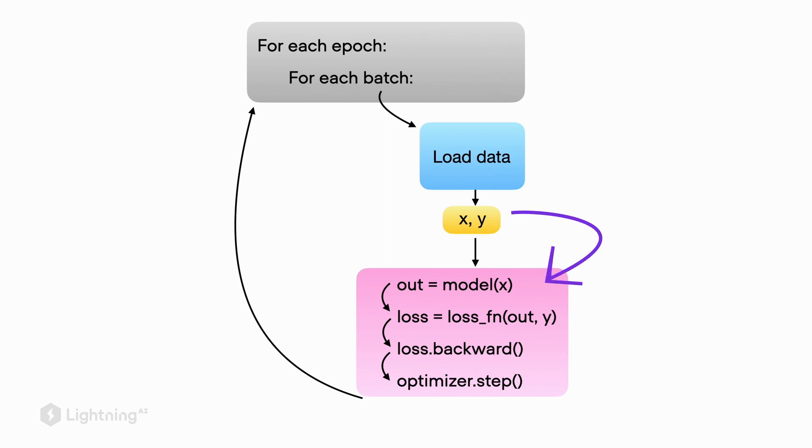So for each batch, we feed the features x to the model, which then produce the predictions. And from the predictions, we compute the loss. And the loss is then backpropagated using dot backward, so that we have the gradients with respect to the weights. And then we can call the step function to update the weights.